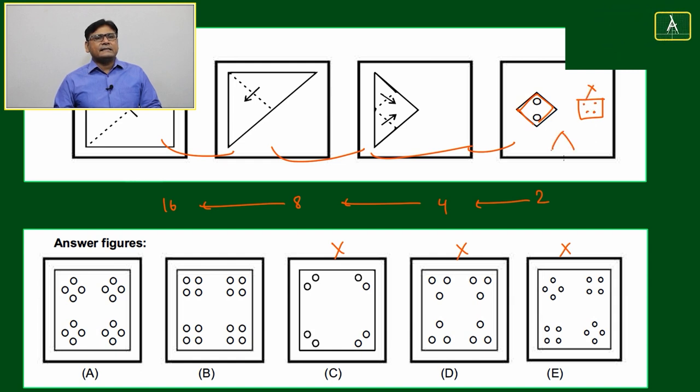Once you will unfold like this, what will happen? Holes will come here, here, here, here, here, and similar thing will convert here, here, here, here, here, here. Means option A is the most suitable option among available options.